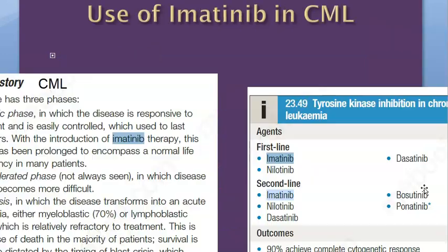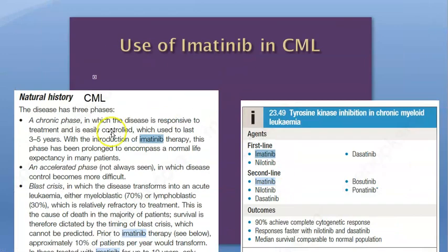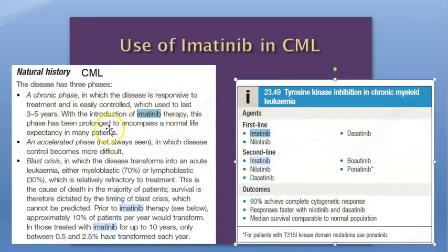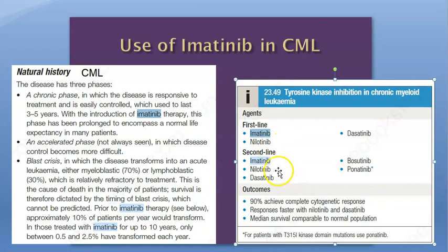Imatinib is very useful and has been found very good for CML and all conditions with a positive Philadelphia chromosome. In CML, whether in the chronic phase, accelerated phase, or blast crisis, the first line treatment is imatinib. The second line also includes imatinib with other drugs, and there has been very good response to imatinib.